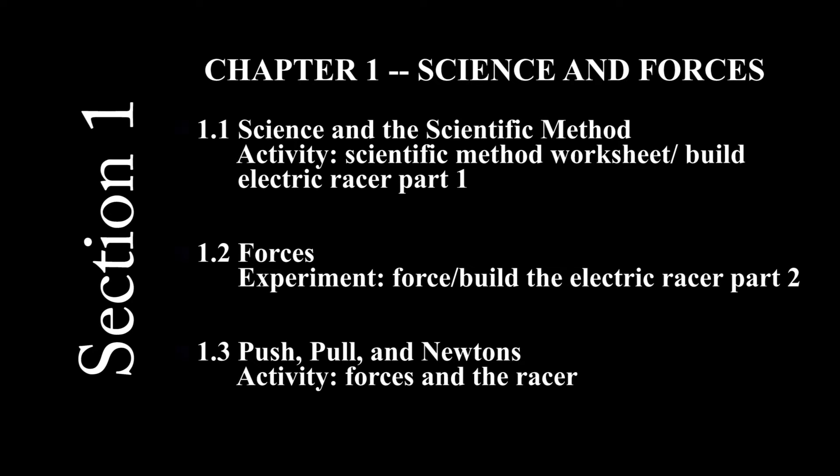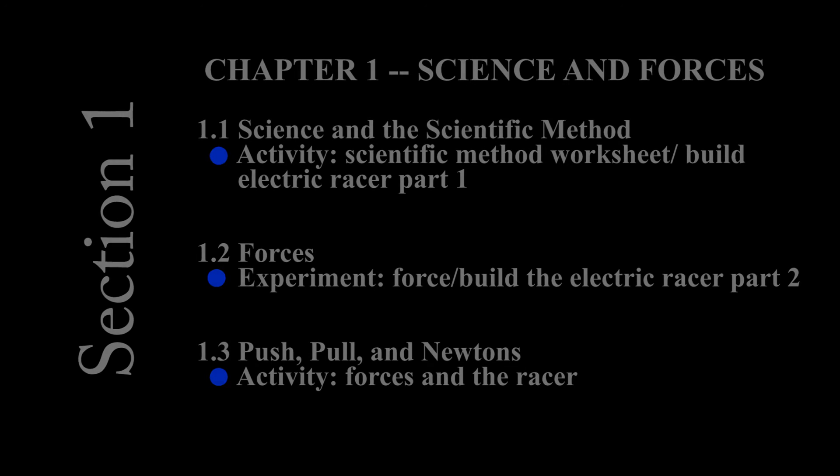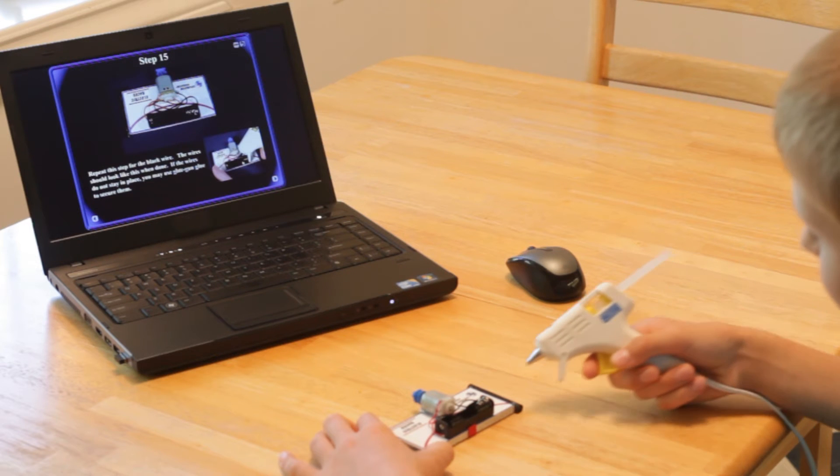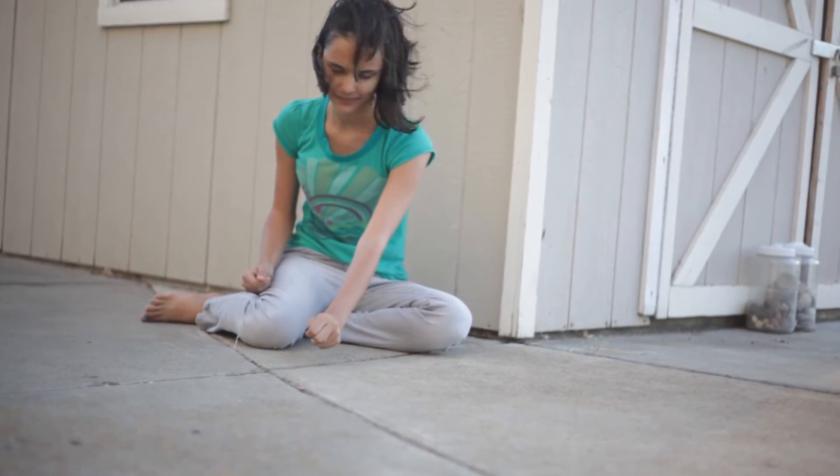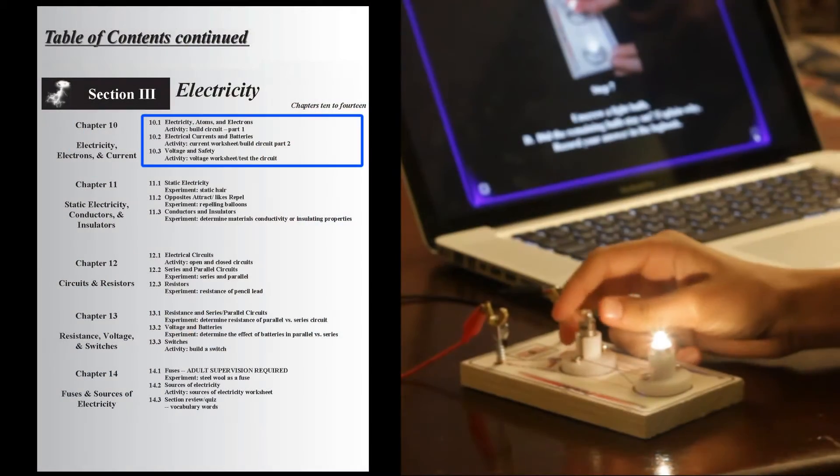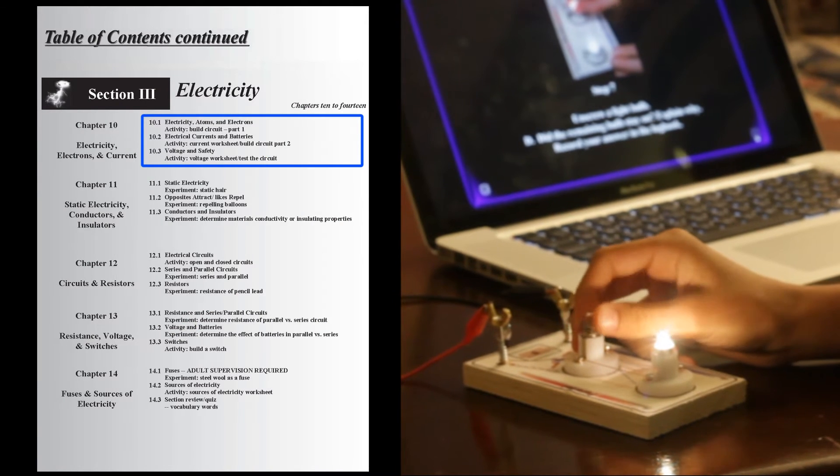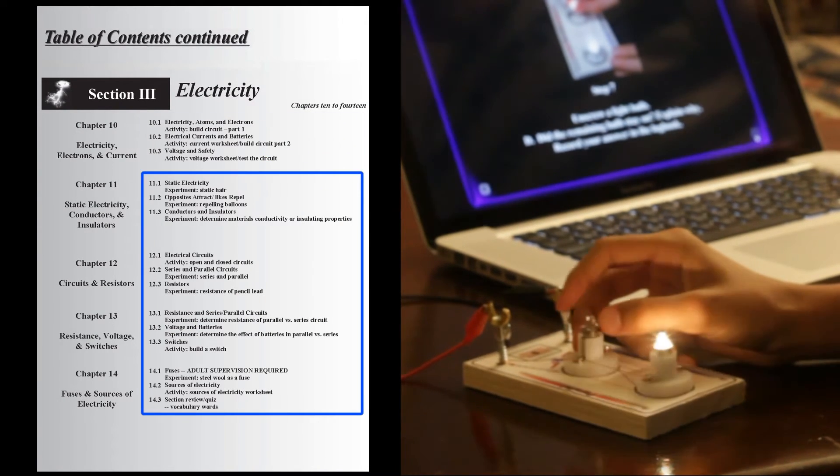In the first chapter of each section, the students will have their regular lessons, but in these activities, they will build their projects. In this case, the car. Then, they will use the car in most of the experiments following these lessons. When they get to a new section, they will build a new project, in this case the circuit, and use it in the experiments following these lessons.